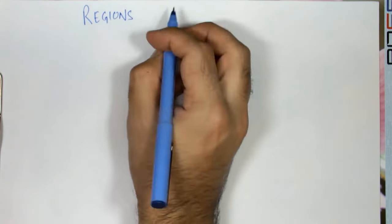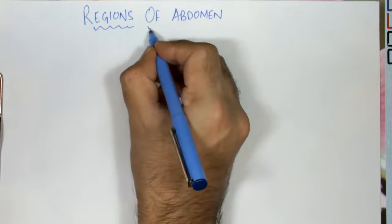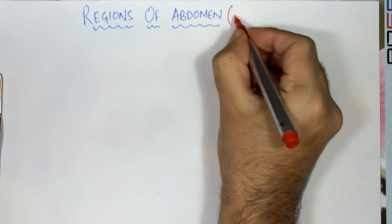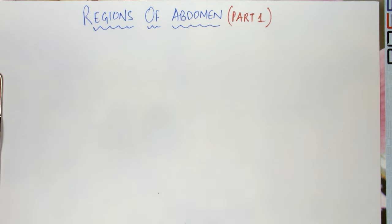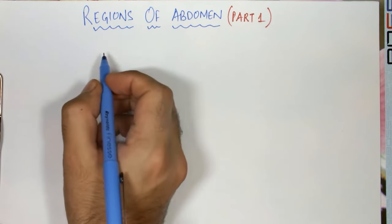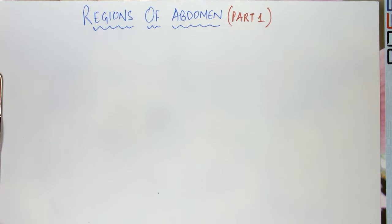In this video we will talk about the various regions of the abdomen. This will be part one of a two-part series. In the second video we will discuss the organs present in the respective regions of the abdomen and also the differential diagnosis of the pain which is referred to these regions.